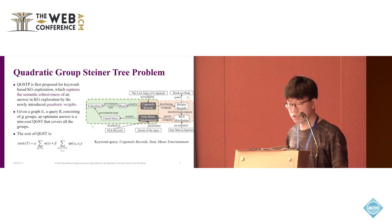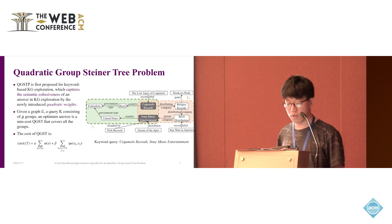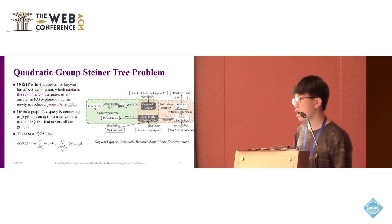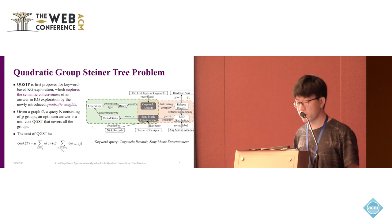The query consists of G groups. The output of the QGSTP is a min-cost QGST, which covers all the groups. Its cost is defined below. We can see that it is a linear combination of the vertex weights and quadratic weights.